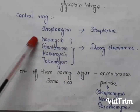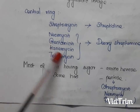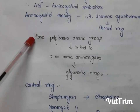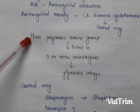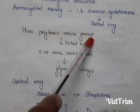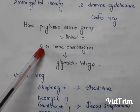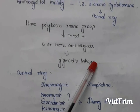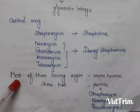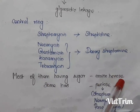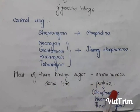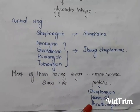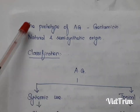The central ring present in aminoglycosides varies by drug: in streptomycin the central ring is streptidine, while in neomycin, gentamicin, kanamycin, and tobramycin it is deoxystreptamine. Aminoglycosides have polybasic amino groups linked to two or more amino sugars by glycosidic or ether linkage. Most of them have amino hexose as the sugar, but some have pentose — examples include streptomycin, neomycin, and paromomycin.